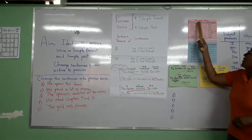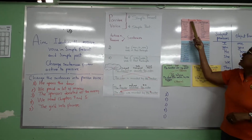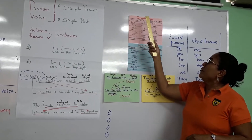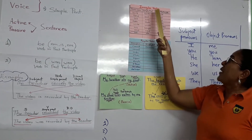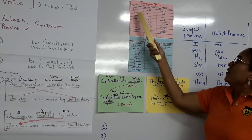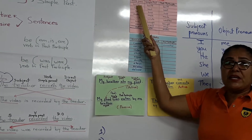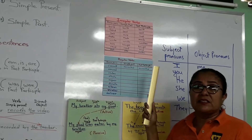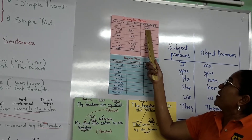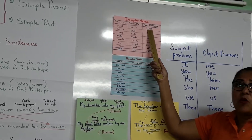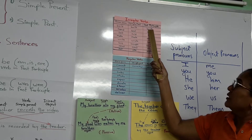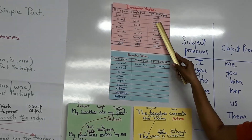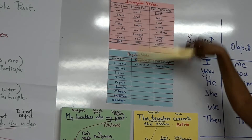For example, we have here this table of irregular verbs. We have the base form, the simple past, and the past participle. For example, the verb 'build' — the simple past is 'built' and the past participle is also 'built'. We have 'send', 'sent', 'sent', and so on.